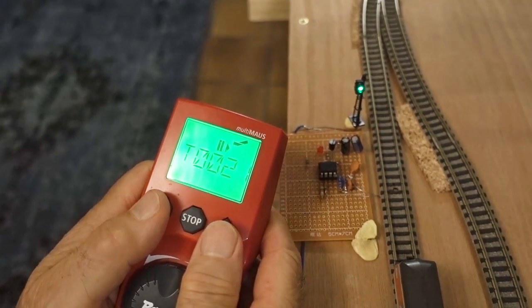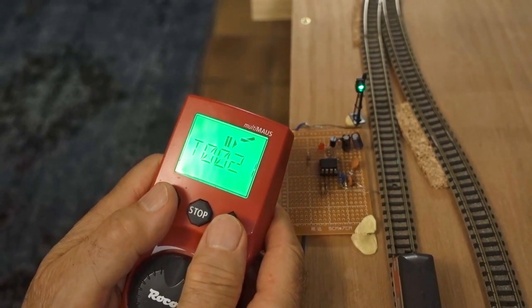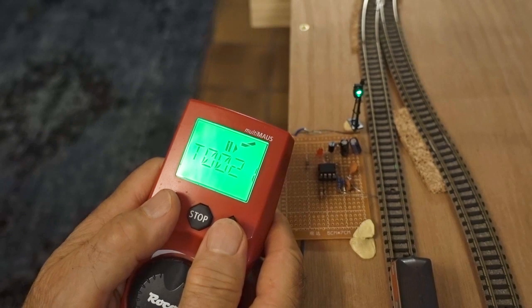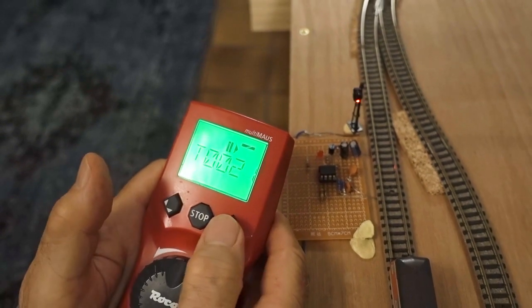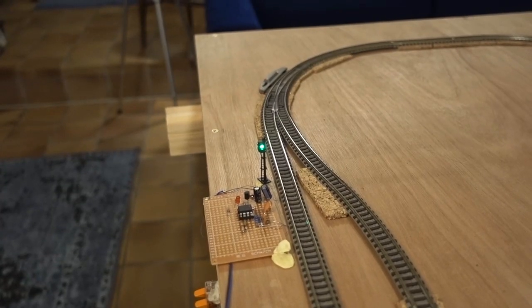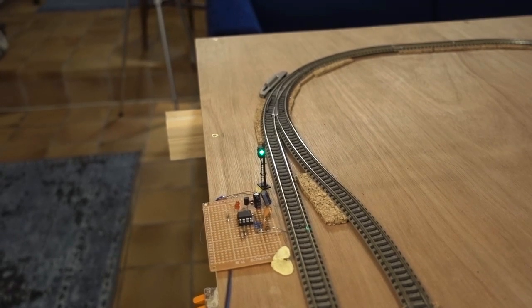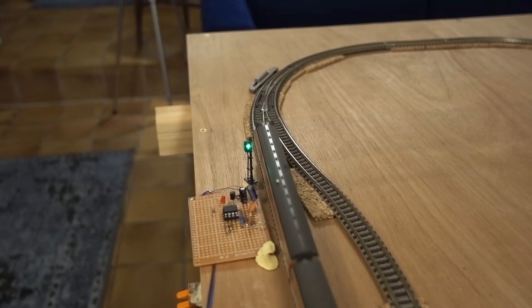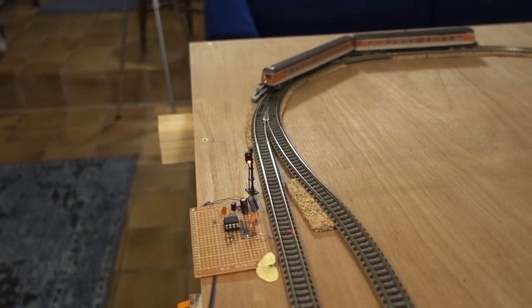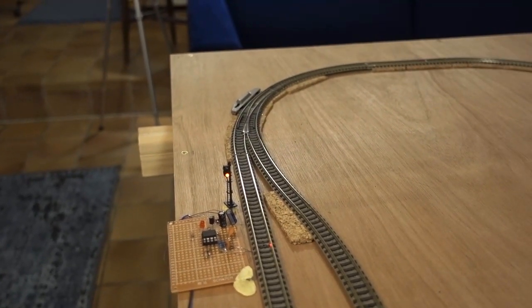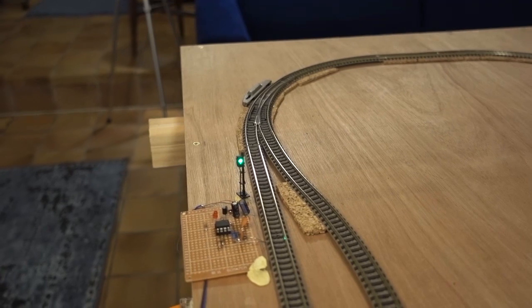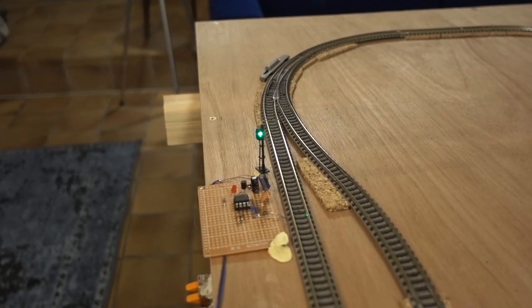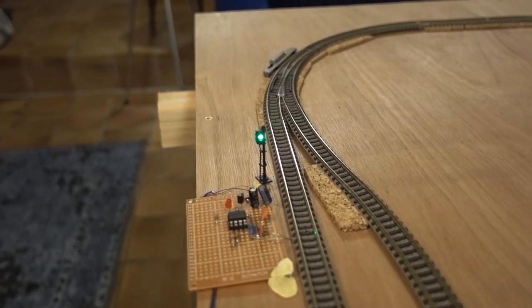The signal operates normally as a DCC signal. Here I've got address 21. And here I demonstrate the automatic operation of the signal. It turns to red as the train passes. And then when the block is clear, it's timed to turn back to green. The timings are adjustable. I'll explain how I do that later.